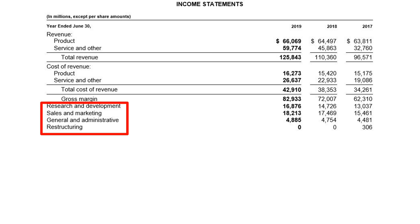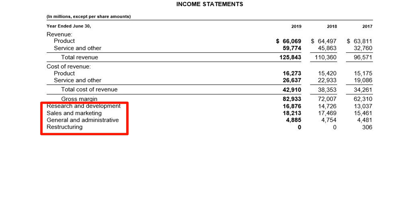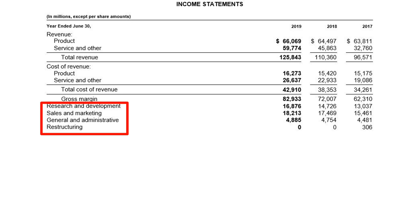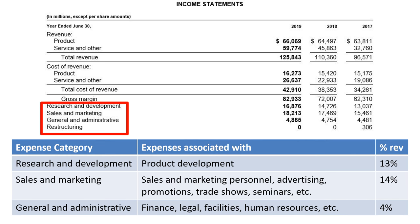The next section in the income statement is what most companies call operating expenses. These are costs that do not directly increase as a result of the number of units sold. The costs might increase year over year, but that is driven by management decisions to allocate resources to strategic priorities. Microsoft splits this section into four line items, of which the first three are recurring, and the fourth only applies when there is an actual restructuring taking place. Research and development expenses include payroll, employee benefits, and third-party development and programming costs associated with product development — 13% of revenue in fiscal 2019.